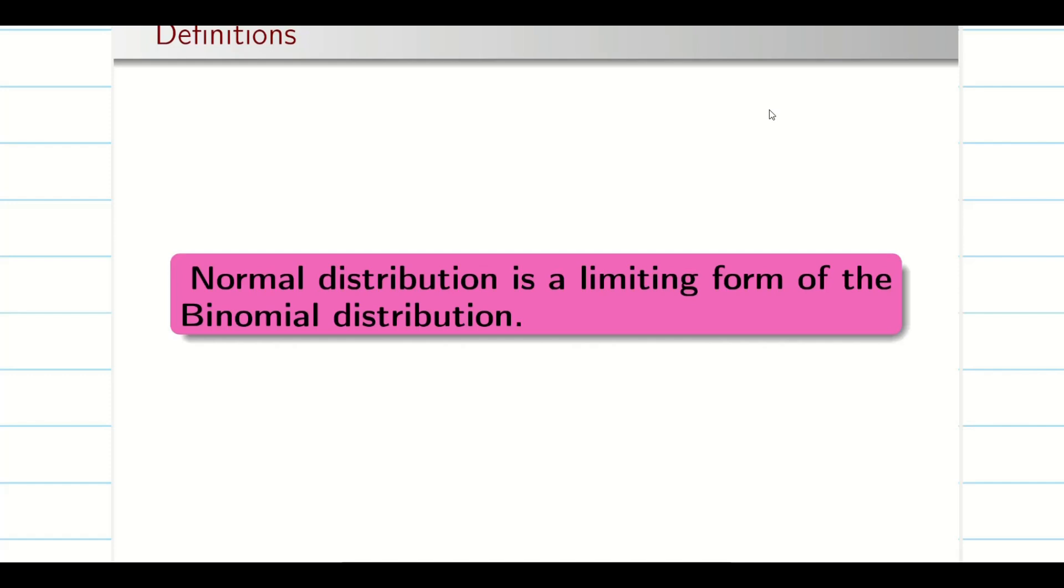So normal distribution is the limiting form of the binomial distribution. So people say normal distribution is also known as Gaussian distribution because it was invented by Gauss but the roots are very deep. At the end of 17th century, a De Moivre, a mathematician as well as a gambler would think about the normal curve.